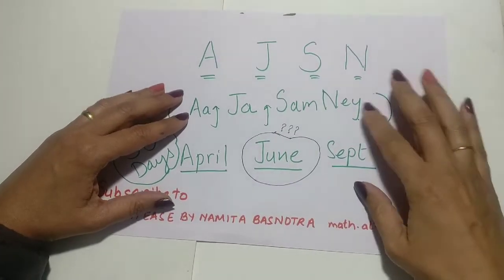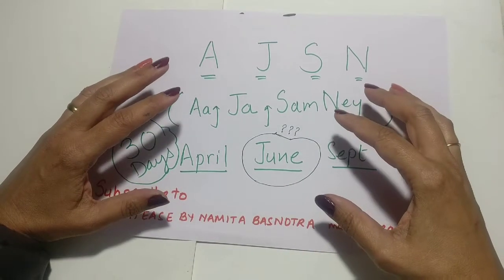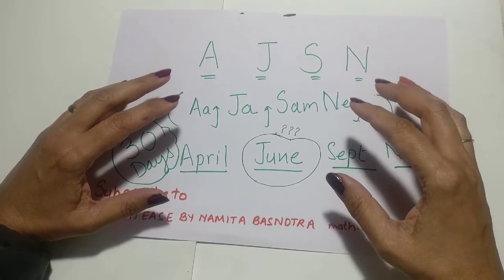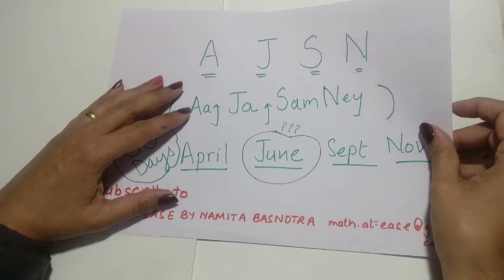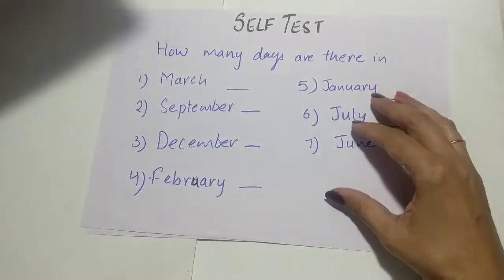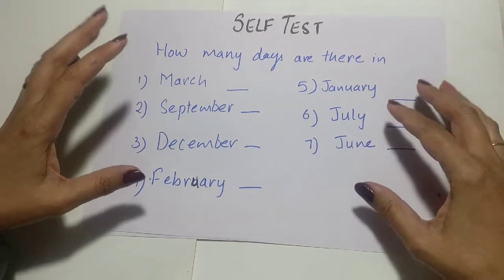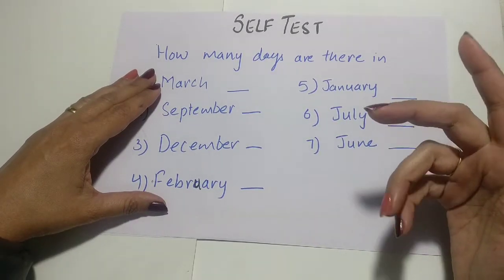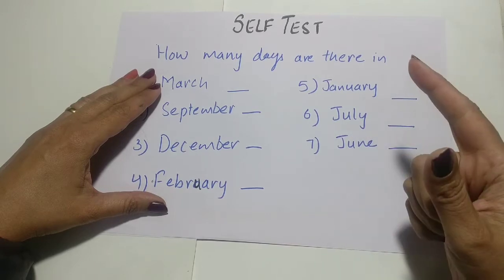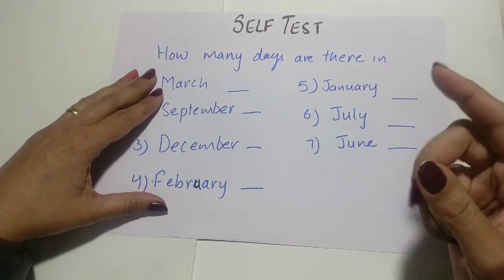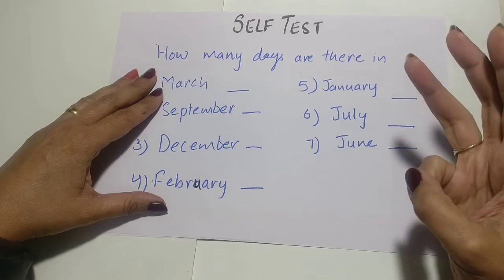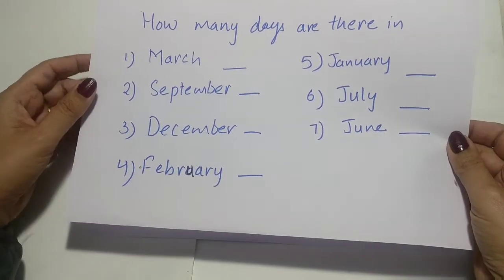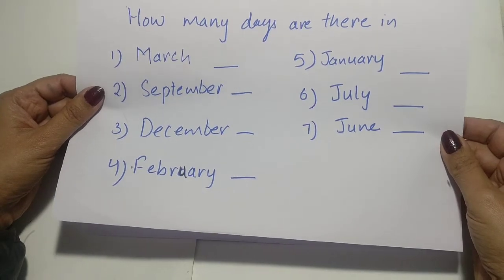Now try this trick to feel how much easier and faster it gets. Here is your self-test — quickly write down these questions, or take a printout if you can, and then answer using the trick 'Aja Samne' or AJSN. Let's revise quickly: A stands for April, J stands for June, S stands for September, and N stands for November.